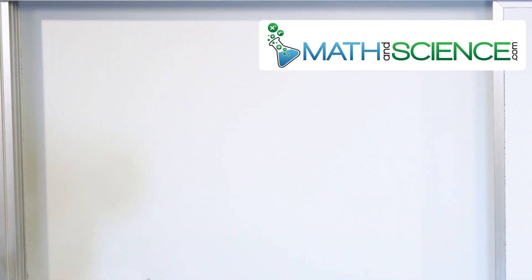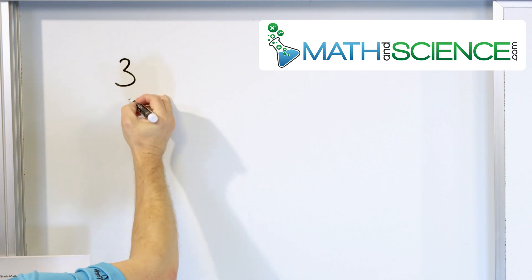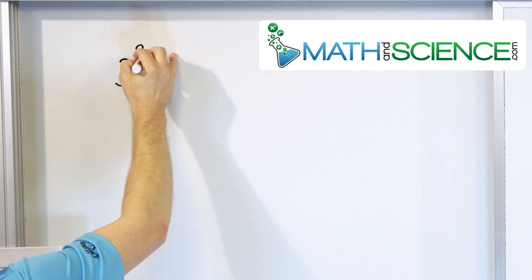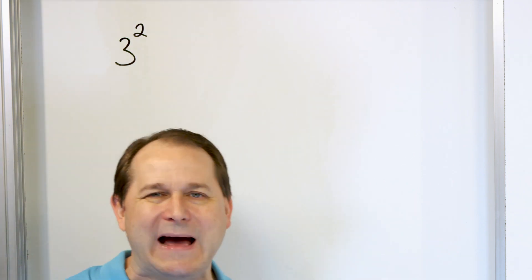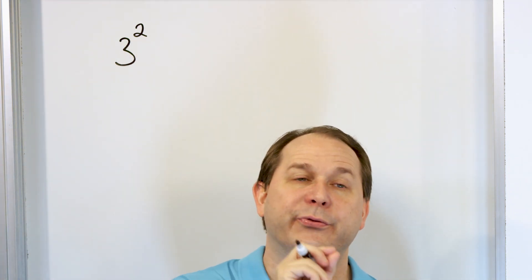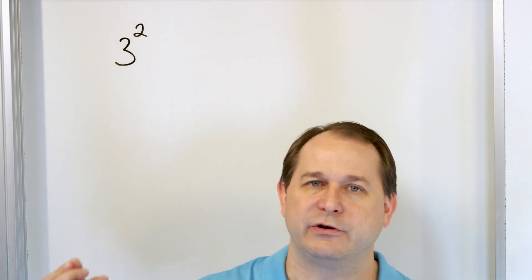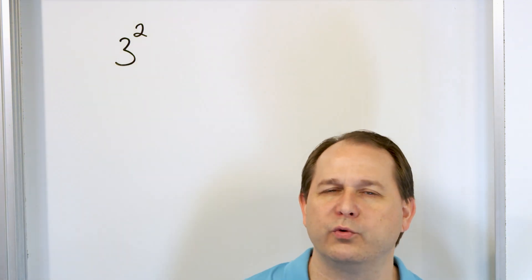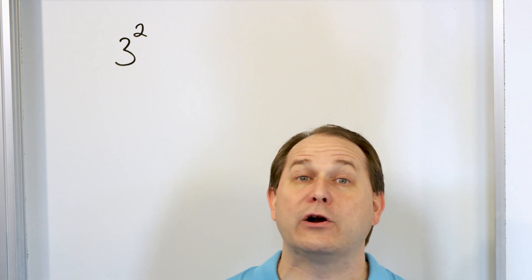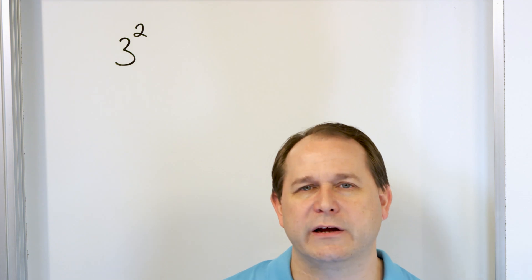Let's see this by example — it's a very simple concept. Let's say that I have 3 raised to the exponent of 2. This number 2 up here is called the exponent; we also call it the power. So you might say 3 to the power of 2, or 3 to the exponent of 2. The number 2 as an exponent has a special word: we call it squared. So you might call it 3 squared, or 4 squared, or 5 squared. When the exponent is a 2, we call it a square.